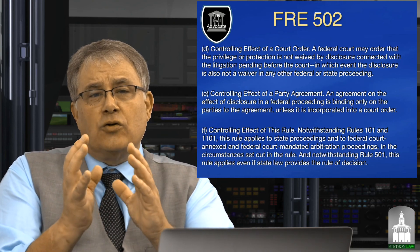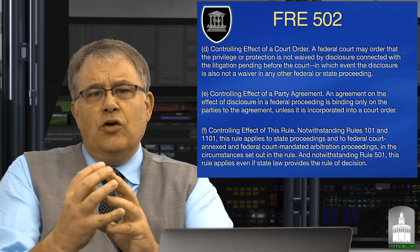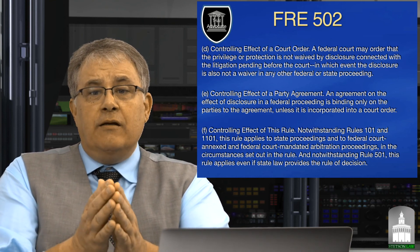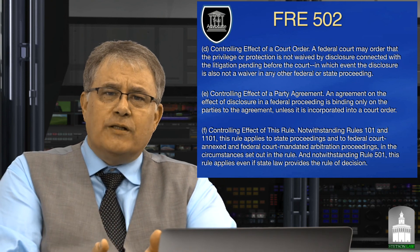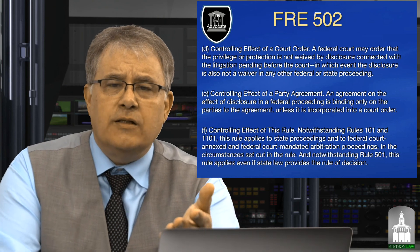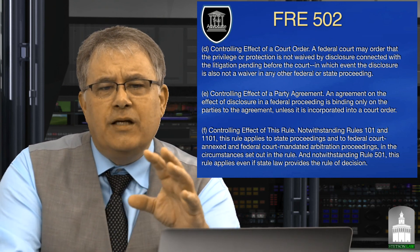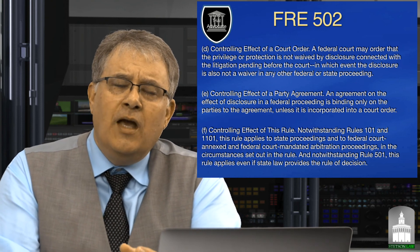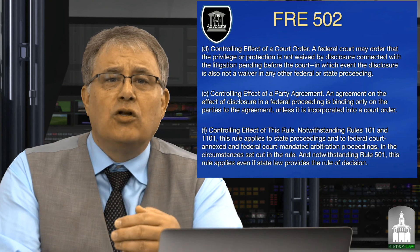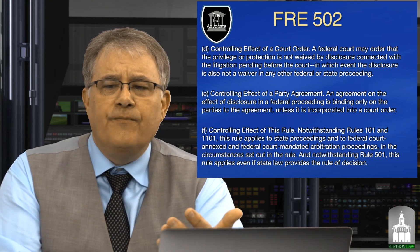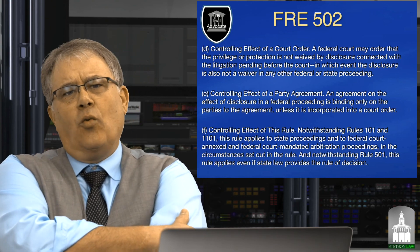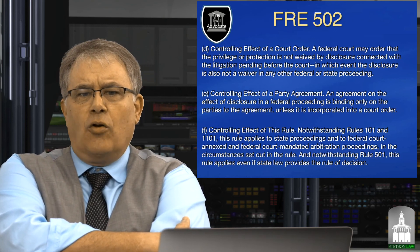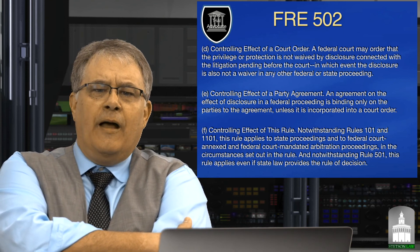Let's step back and think about them clearly. Attorney-client privilege deals with those things your client told you that you now have a duty to keep confidential. Work product deals with the research you do and the preparation for presentations you'll use on behalf of the client. Because it derives from both your knowledge as a lawyer and the specific confidential information of the client, it is protected. We aren't required to disclose our work product to the opposing side.